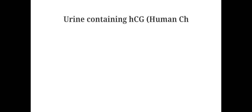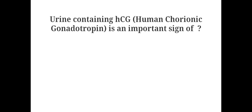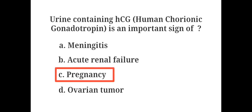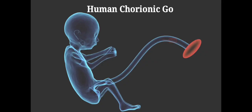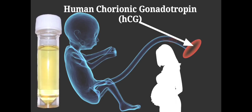Urine containing HCG (human chorionic gonadotrophin) is an important sign of: A. Meningitis, B. Adrenal failure, C. Pregnancy, D. Ovarian tumor. The answer is C. Pregnancy. Human chorionic gonadotrophin is a hormone produced by the placenta after implantation. Hence the presence of HCG in urine is a sign of pregnancy.